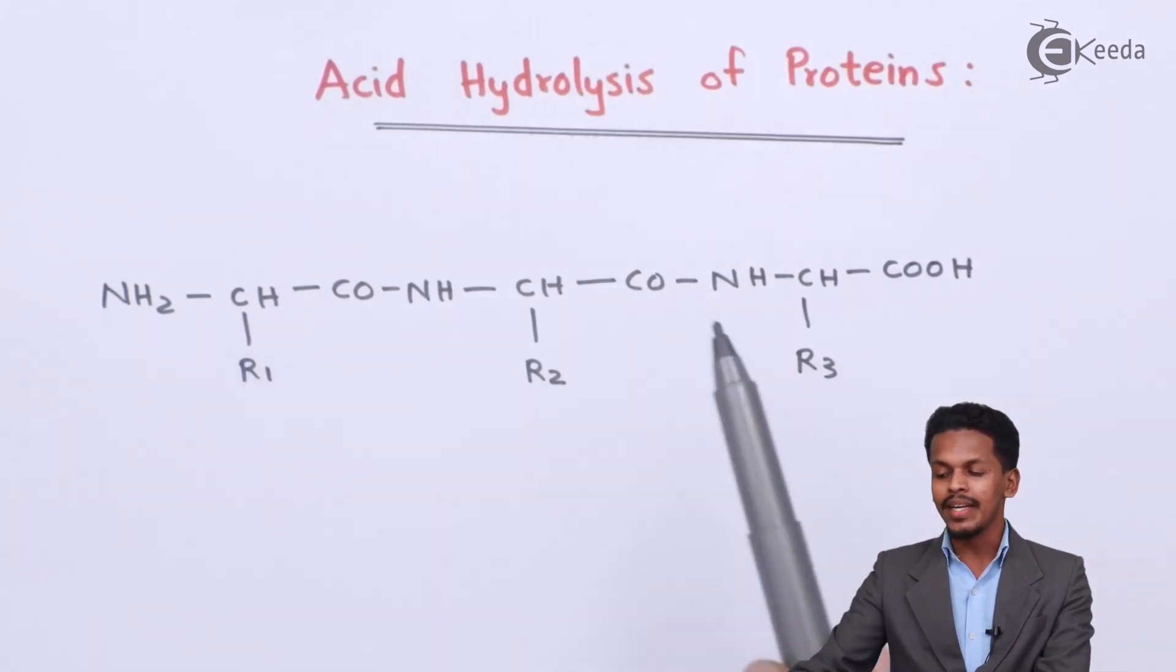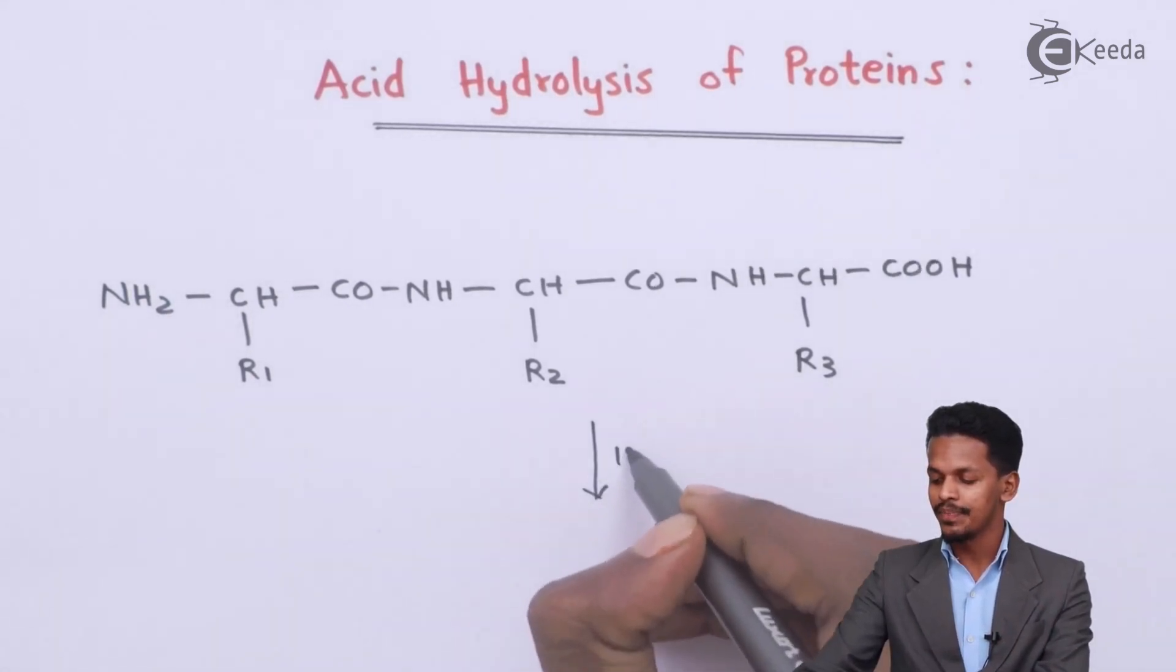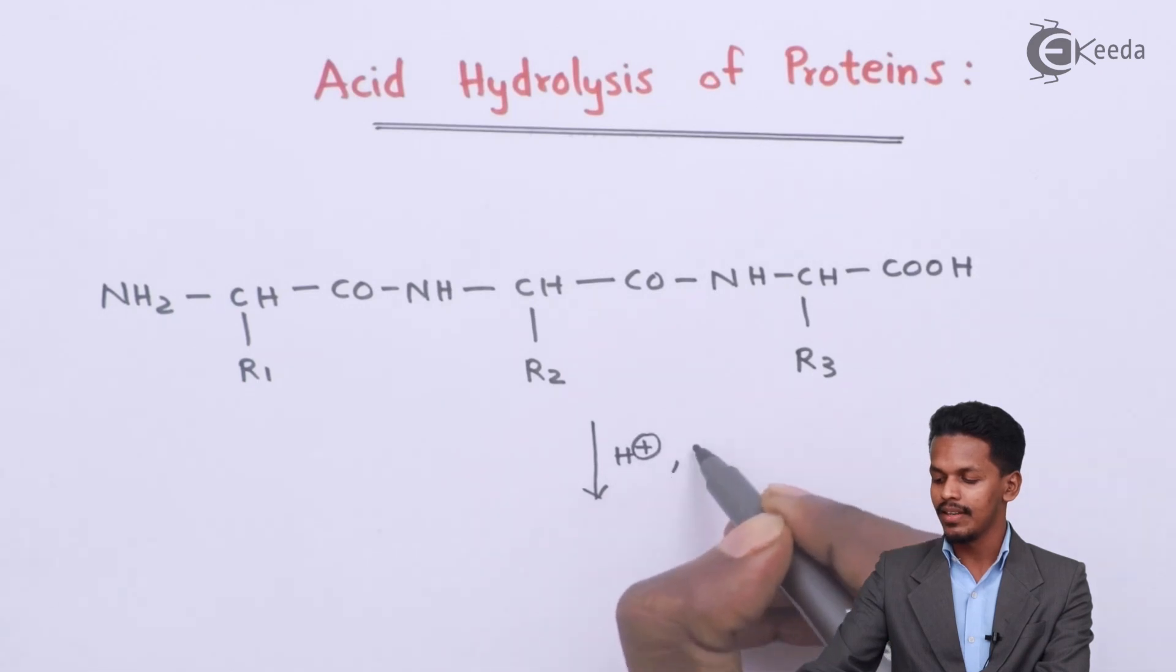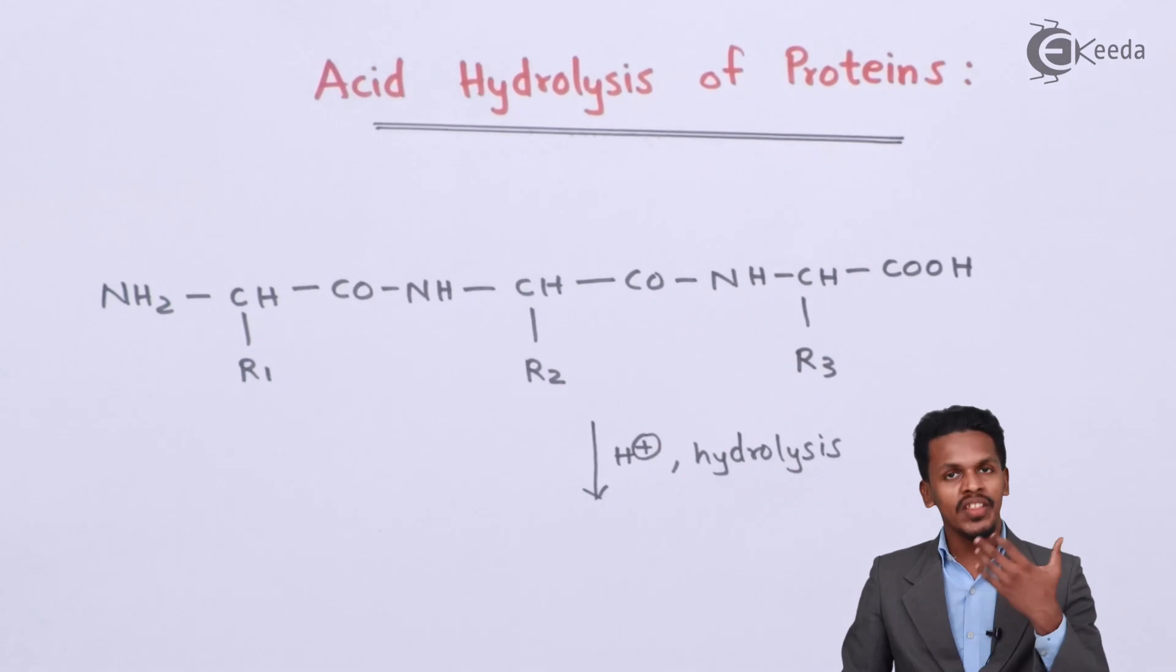This is the general formula for a particular protein. If we do acid hydrolysis, we use H+ and water. This hydrolysis could be done with the help of an acid, an alkaline, or with an enzyme.